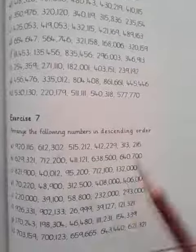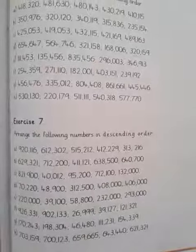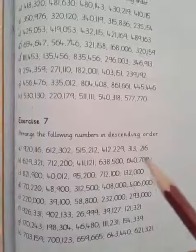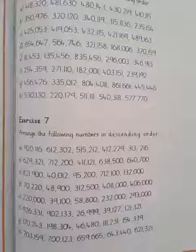Descending order means to arrange the values from largest to smallest. The highest value you write first, then next, next, next, and so on, until you reach the smallest.